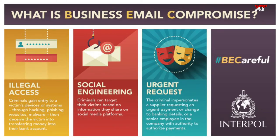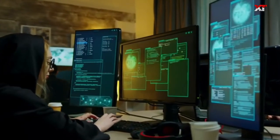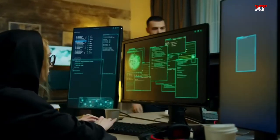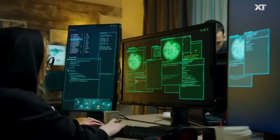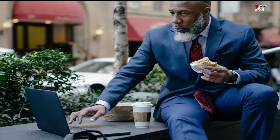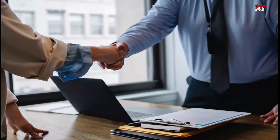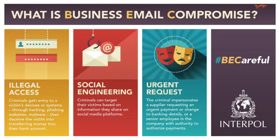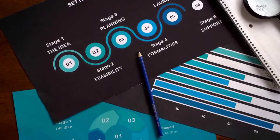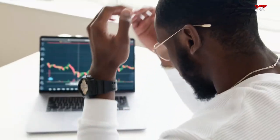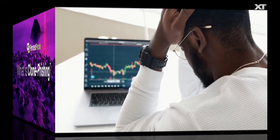BEC, Business Email Compromise, also known as CEO Fraud, involves hackers spoofing a top executive's email account. They then utilize this access to request login credentials, money, and sensitive information from other workers, such as other executives, senior staff, legal teams, and trusted vendors and partners. A successful BEC assault allows a hacker to gain full access to a top executive's account, which can have devastating consequences and result in significant financial losses for a company.